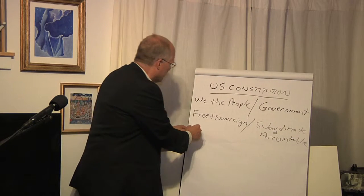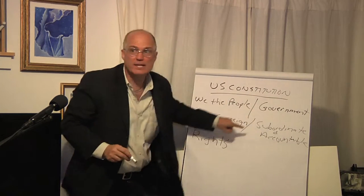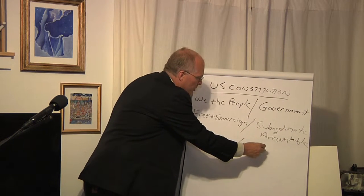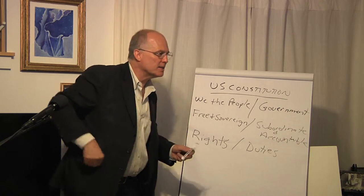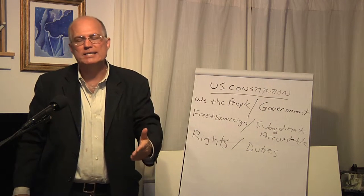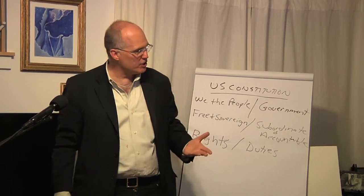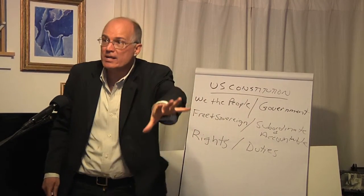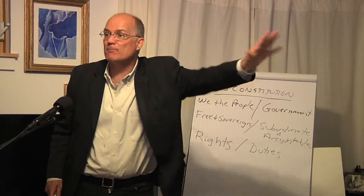We the people are free and sovereign because we are described as having rights. Government does not have rights against the people. In fact, government has duties. It's really important to recognize the difference between rights and duties. If I have a right to do something, it means I can do it and I don't need anybody's permission. And if anybody or anything, including government, tries to take that right away from me, it's the government that's illegitimate.